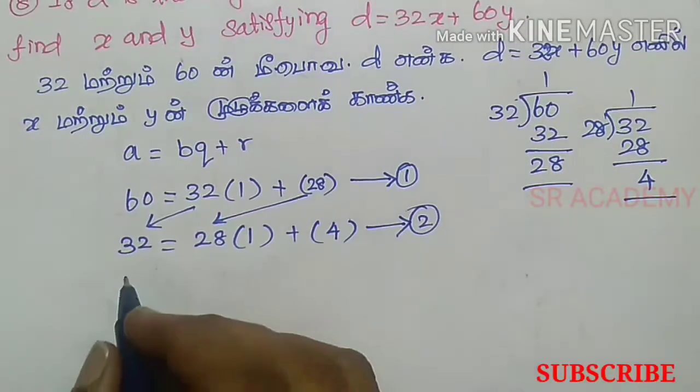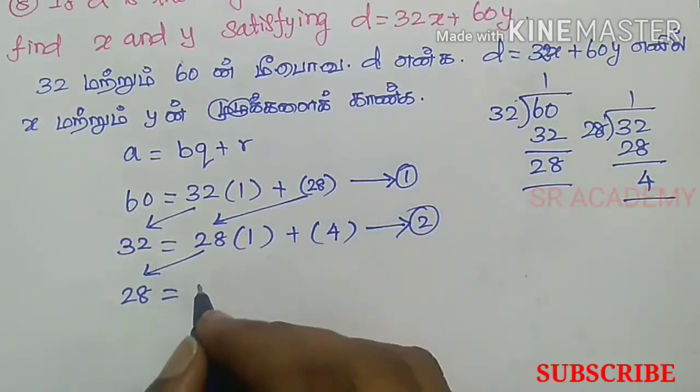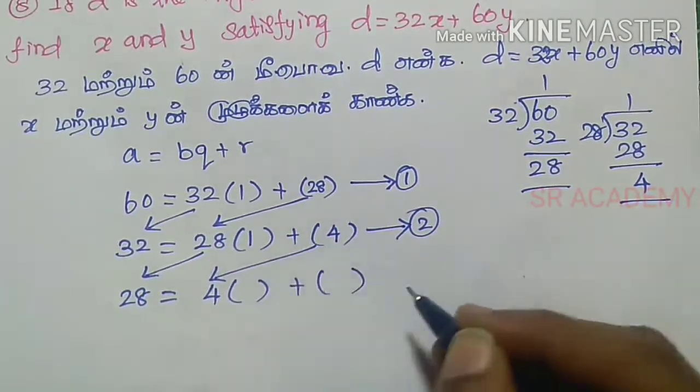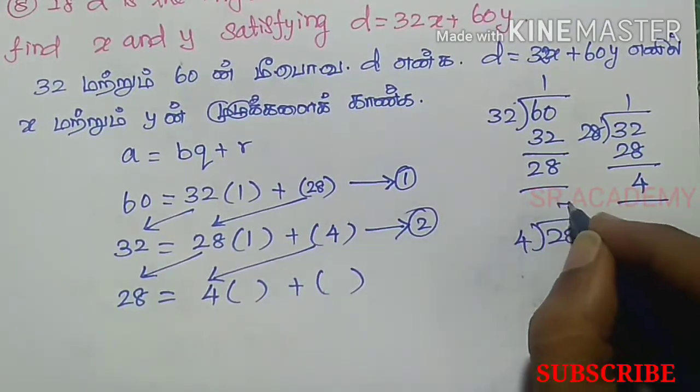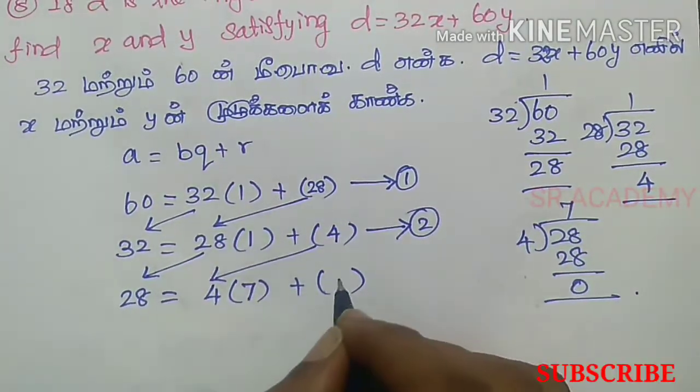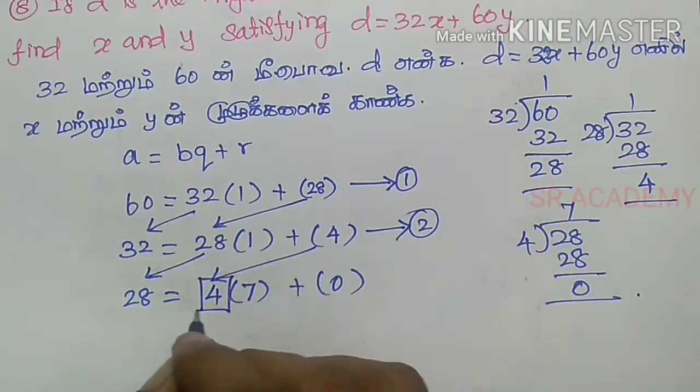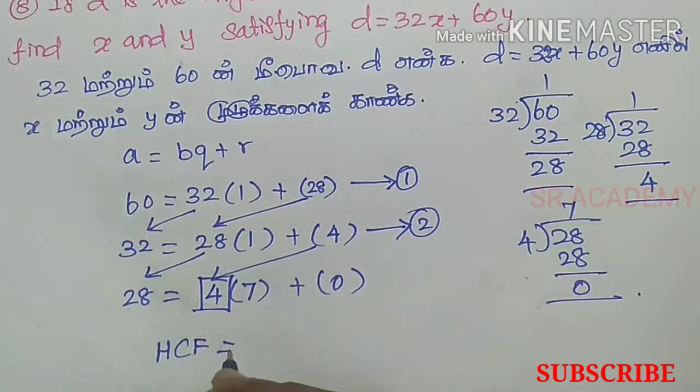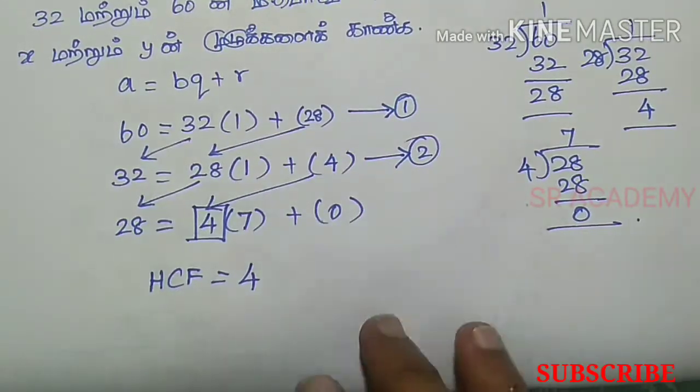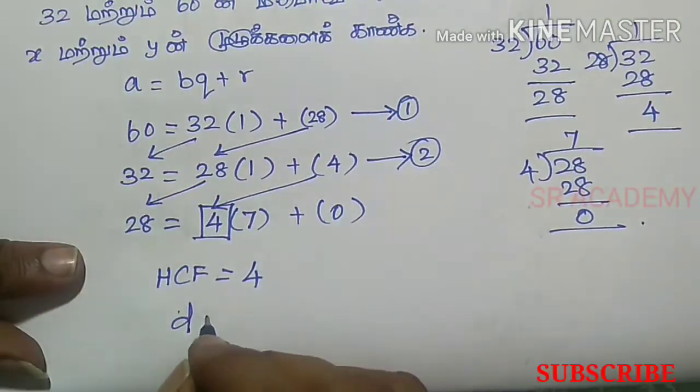This is equation number 2. Next, 28 equals 4 into something. 7 times 4 is 28, the remainder is 0. Therefore, D equals 4.